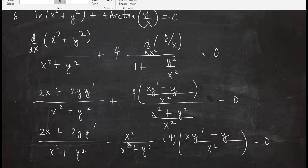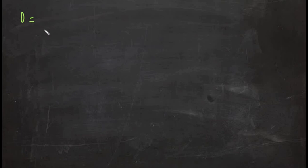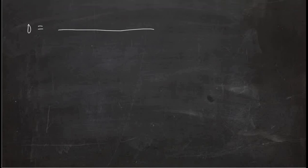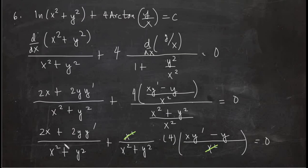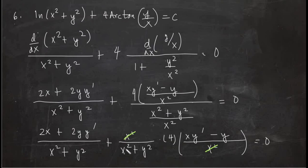Isolating y′ terms: 2y·y′ + 4x·y′ on one side, and 4y − 2x on the other. Factoring: 2y′(y + 2x) = 2(2y − x). Canceling the factor of 2 from both sides gives y′ = (2y − x)/(y + 2x). That's the final answer.